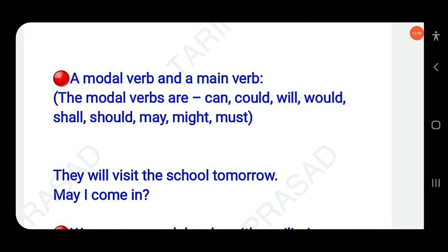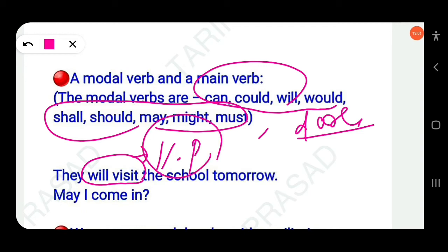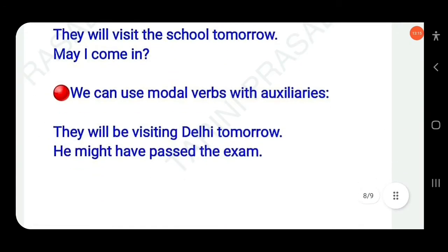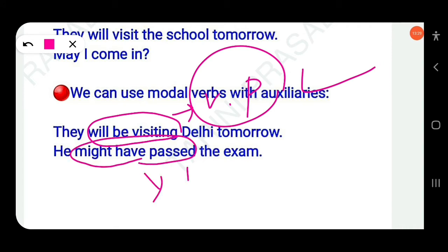Modal verbs — can, could, will, would, shall, should, may, might, must, dare — combine with main verbs to form verb phrases. For example, 'They will visit the school tomorrow' — verb phrase is 'will visit'. 'May I come in?' — verb phrase is 'may come'. 'They will be visiting' — verb phrase is 'will be visiting'. 'He might have passed the exam' — verb phrase is 'might have passed'.